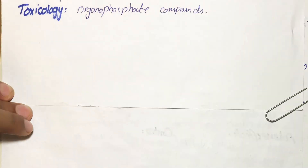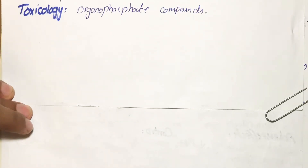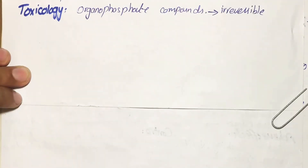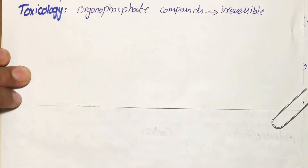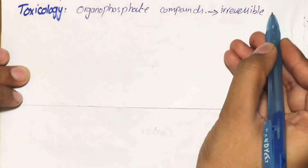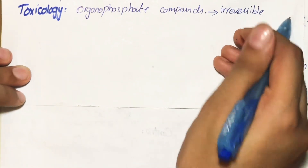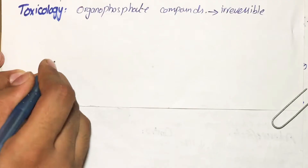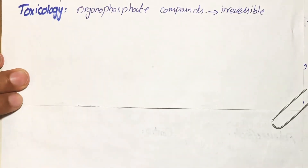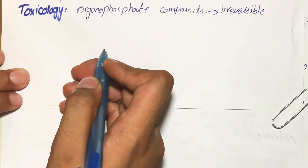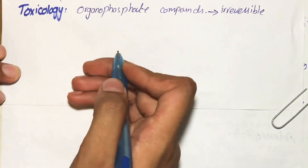Organophosphates are mostly agricultural insecticides, which have led to numerous accidental poisonings. Many of these agents were actually developed by the military as nerve agents and are extremely toxic because they bind to the enzyme irreversibly, leading to long-lasting effects. These agents are frequently used for suicidal or homicidal purposes.